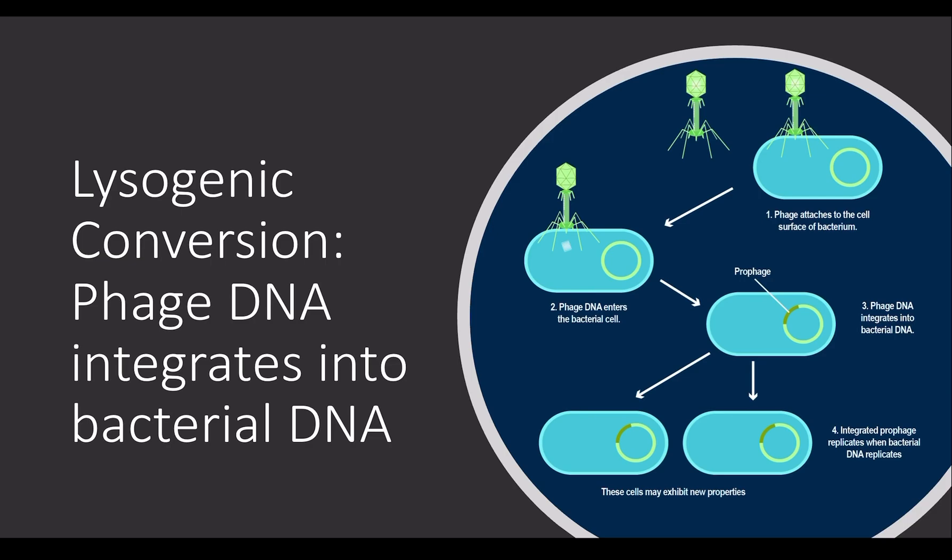Lysogenic conversion is a form of viral reproduction. It begins with a virus injecting its genetic material into that of a bacterial host. From there, the virus's genetic material integrates itself with the host genome. The viral DNA is able to express only repressor genes so that it is not being expressed and thus can remain undetectable to the host cell. With the host genome integrated with the viral genetic information, it is now known as a prophage or provirus.